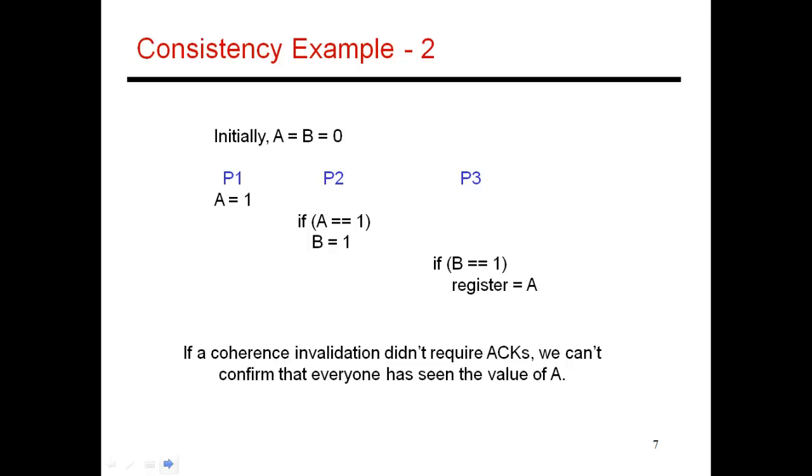Let's now look at the second example. In this case, I'm doing a write of A equals 1. Let's assume that I'm using a directory-based cache coherence protocol. So here's the directory for A. I first tell the directory that I'm doing a write of A, make sure that I have exclusive permissions.